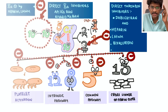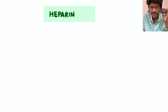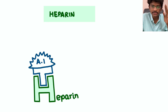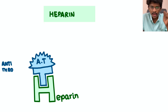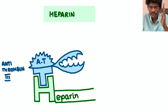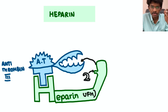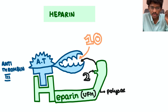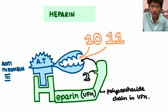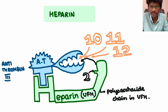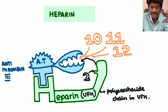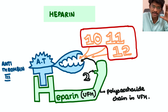First, unfractionated heparin (UFH): it activates antithrombin III, which cuts factors 10, 11, and 12. However, for cutting factor 2 (thrombin), UFH's long polysaccharide arm is needed to push factor 2 into antithrombin III's active site for cleavage. UFH is cleared by the liver.